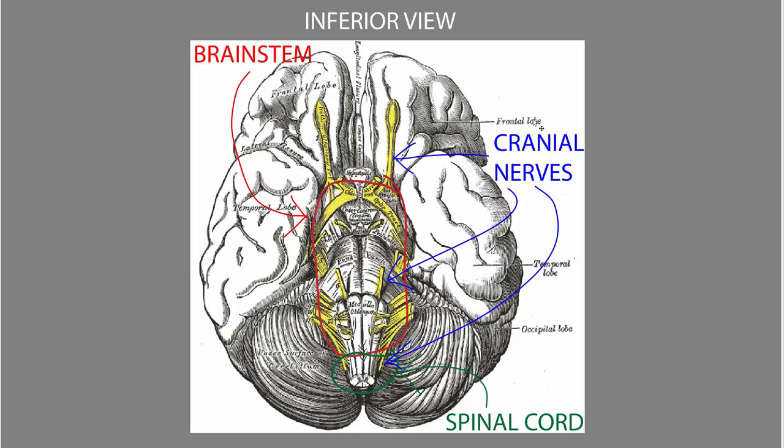The cranial nerves are referred to by either a name or a number, with the numbers traditionally in Roman numerals — numbers 1 through 12. Starting with 1 and ending with 12: olfactory, optic, ocular motor, trochlear, trigeminal, abducens, facial, vestibular, cochlear, glossopharyngeal, vagus, accessory, and hypoglossal. We'll get into the details of them later.